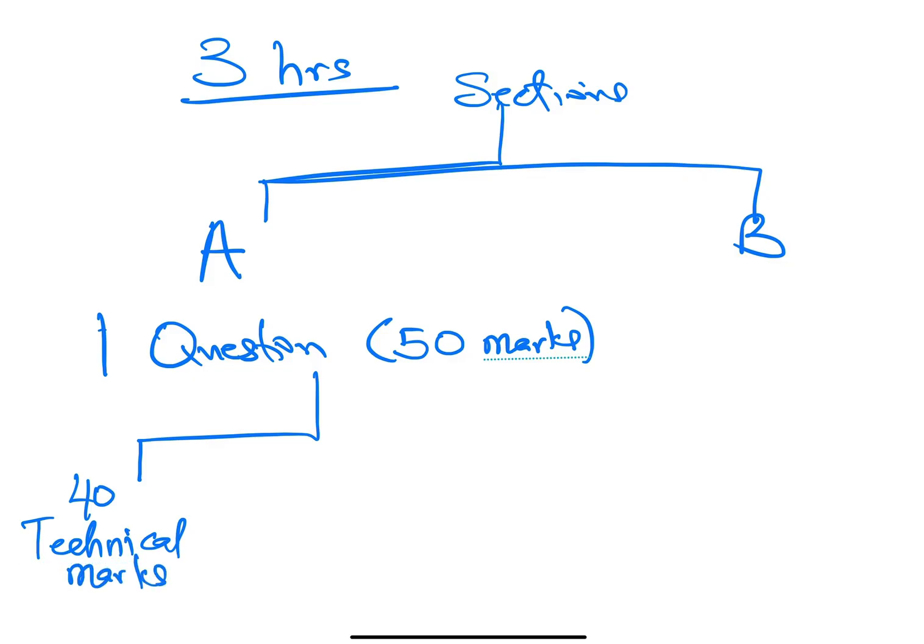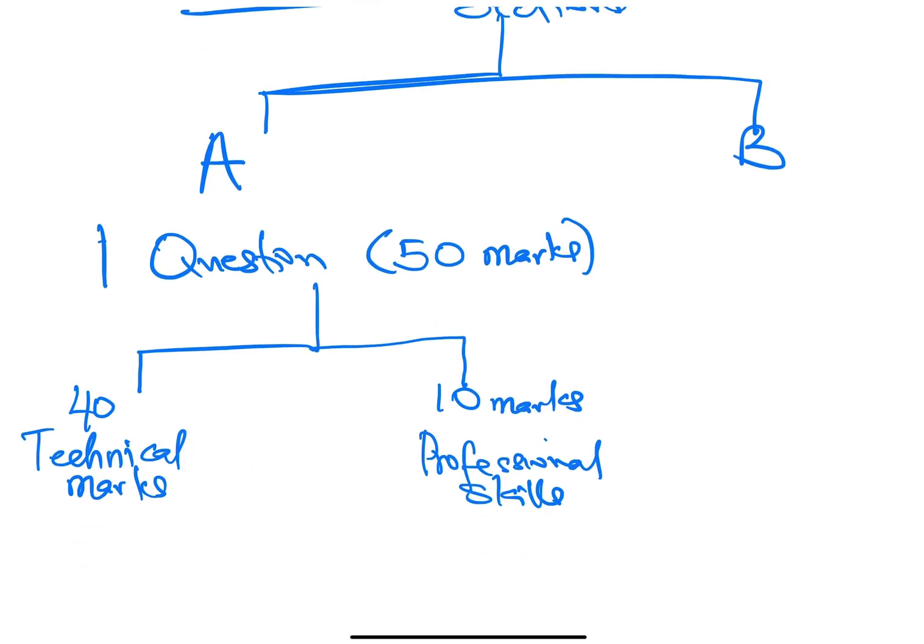So 40 will be technical marks, just testing the knowledge of the syllabus. However, there will be 10 marks that will be based on your professional skills. And professional skills is just about how you're writing, not what you're writing. Technical marks is about what you're writing, but professional marks is about how you're writing it.